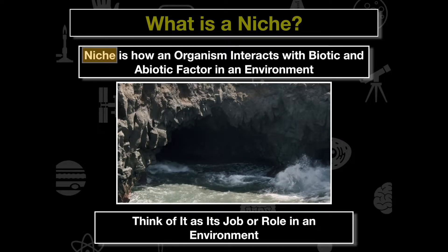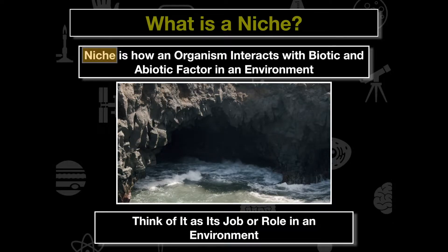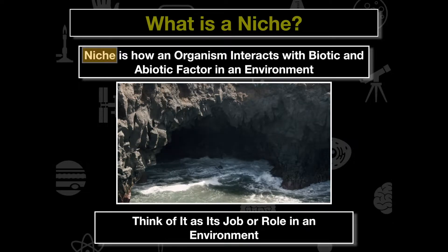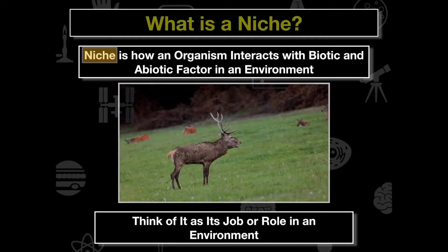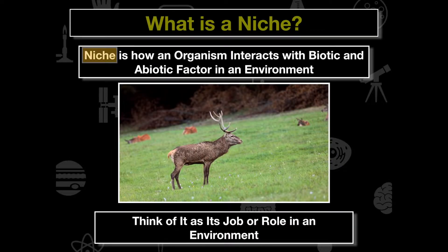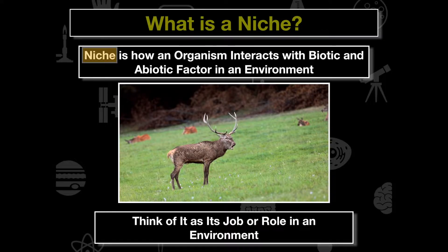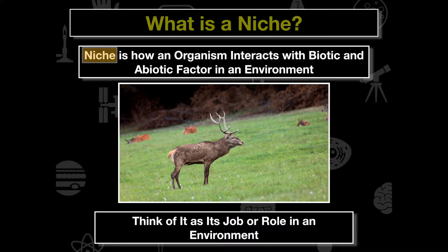Theoretically, each species has its own unique niche and no two are exactly the same. A description of a species' niche would include things like what it eats, where it eats, where it lives, what type of habitat it prefers, how it affects other species, and how it affects the abiotic environment. These are all things we can associate with that organism's job or role within the environment.